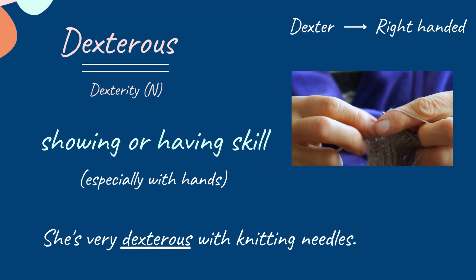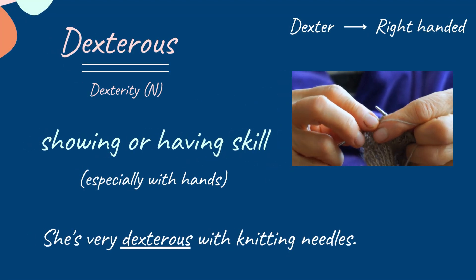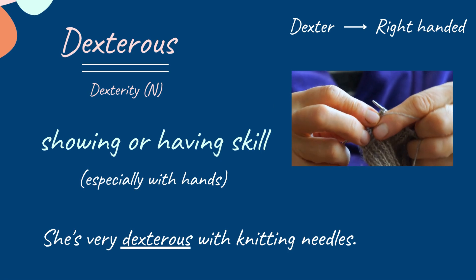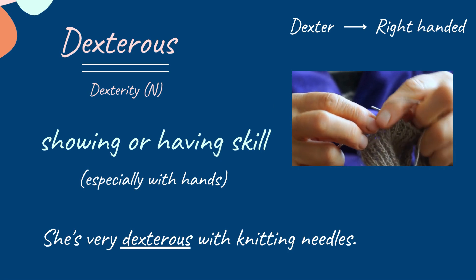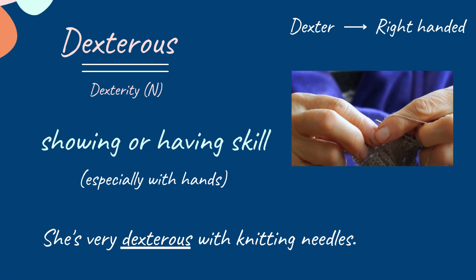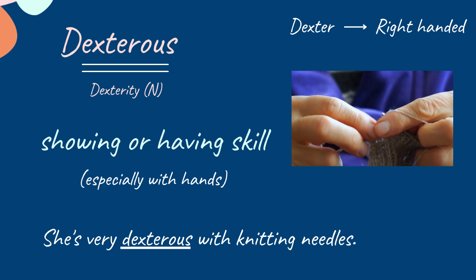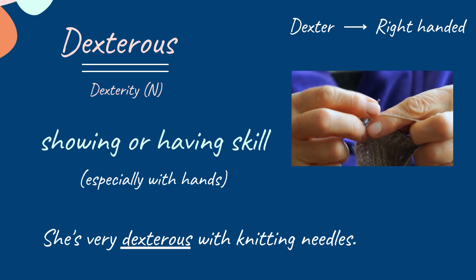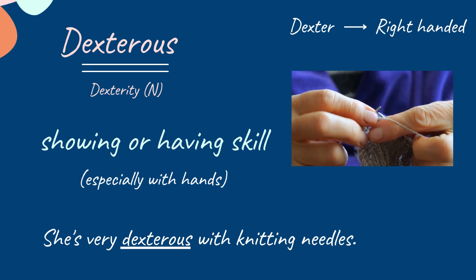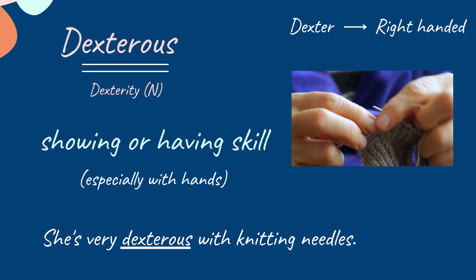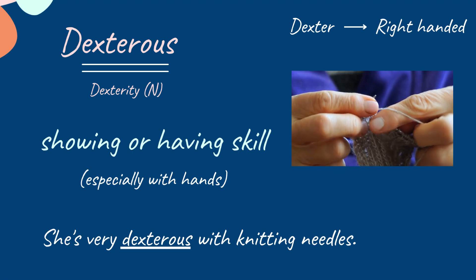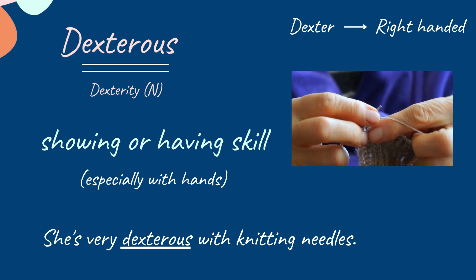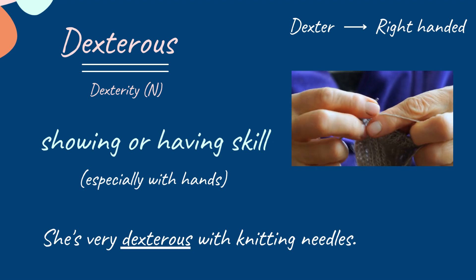Dexterous. If a person is showing or having skills, especially with hands, then he or she is called a dexterous personality. Dexterous comes from the Latin word 'dexter', which means right-handed. Previously, it was believed that a right-handed person is skillful while a left-handed person lacks skill. From that, the meaning 'skillful' has come.